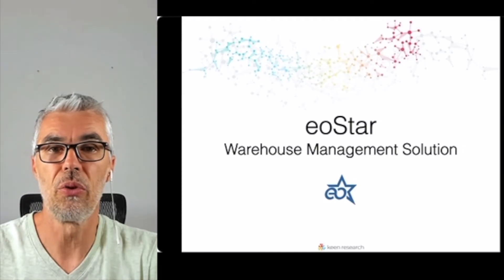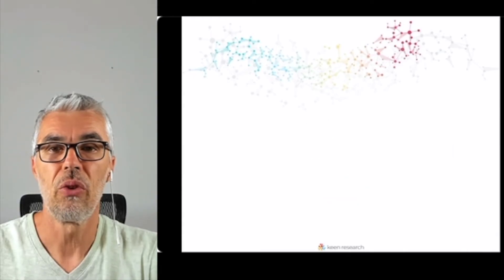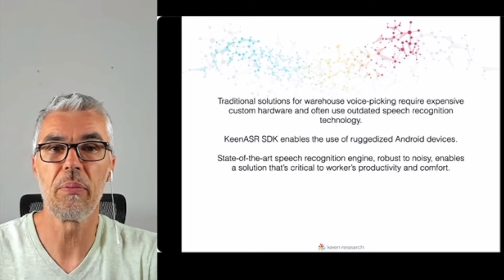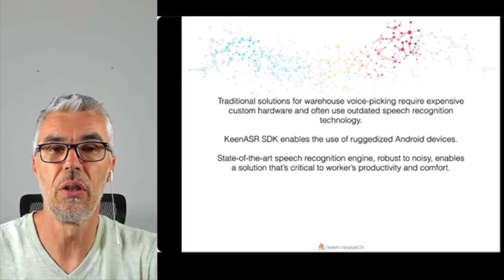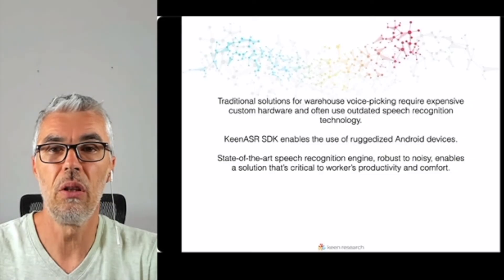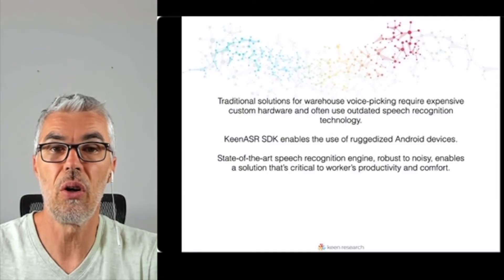Eostar develops warehouse management solutions for the beverage industry. Traditional solutions for warehouse voice-picking require expensive custom hardware and often use outdated speech recognition technology. Keen ASR SDK enables the use of much cheaper ruggedized Android-based devices in a robust and customizable solution built on a state-of-the-art speech recognition engine. Workers rely on the app for their entire eight-hour shift, and the voice activity detection and always-on listening capabilities that Keen ASR enables are critical to worker productivity and comfort. With Keen ASR SDK, Eostar significantly reduced hardware costs and achieved high accuracy in noisy warehouse environments.